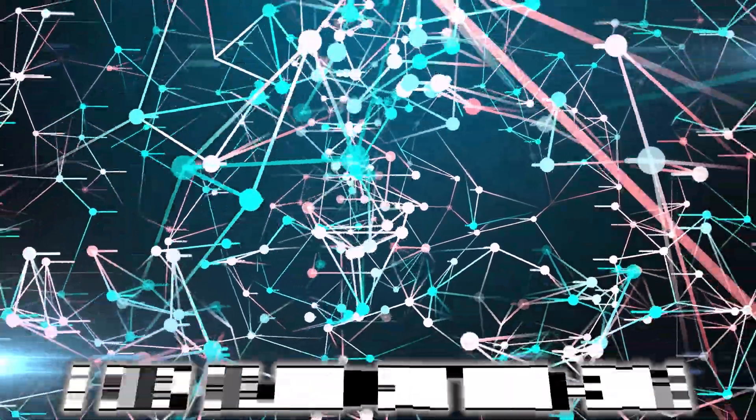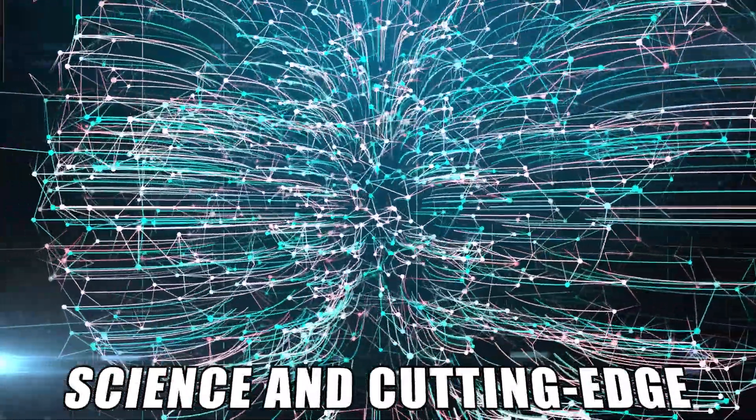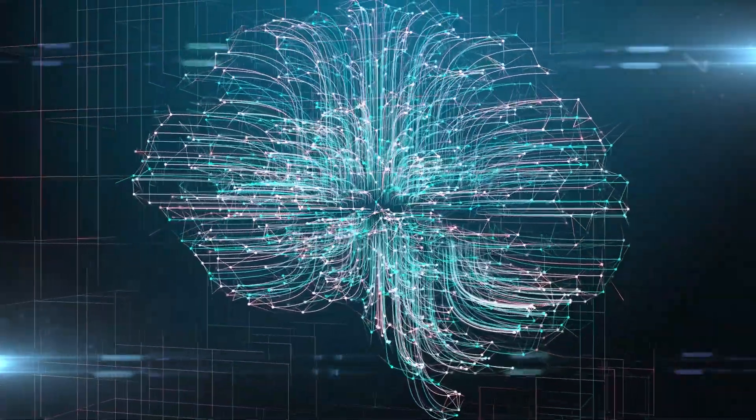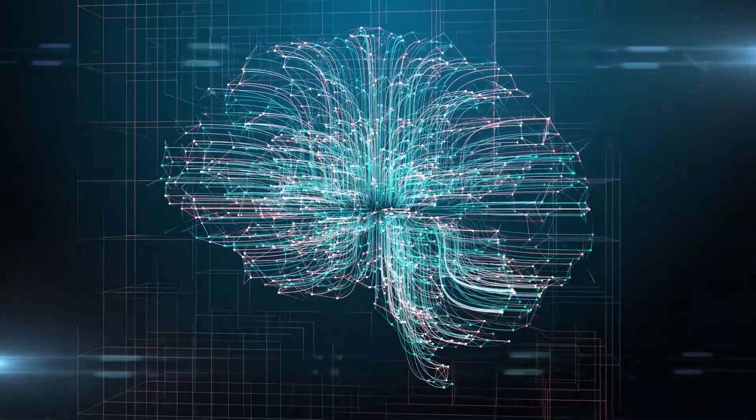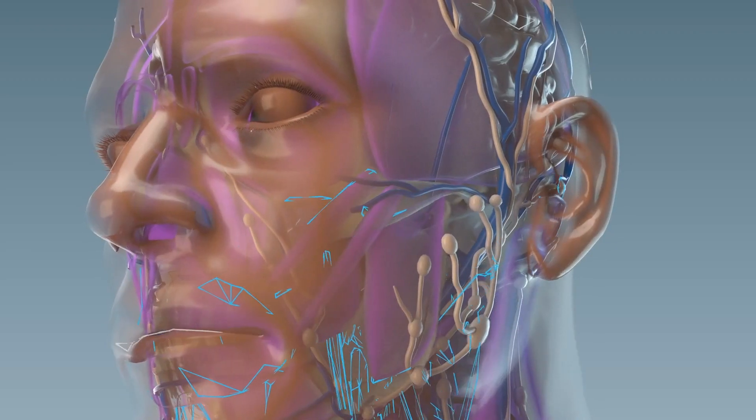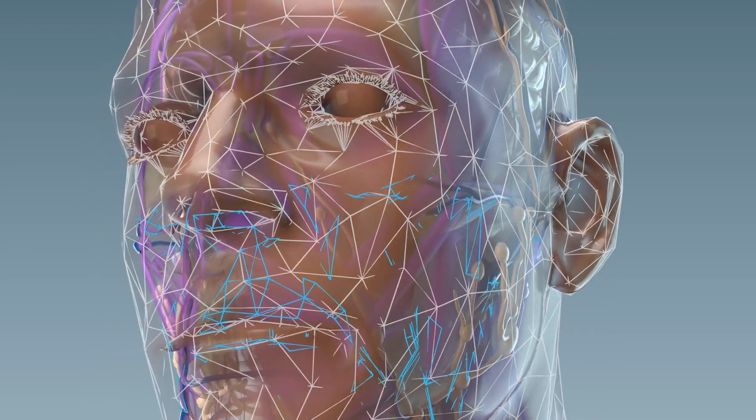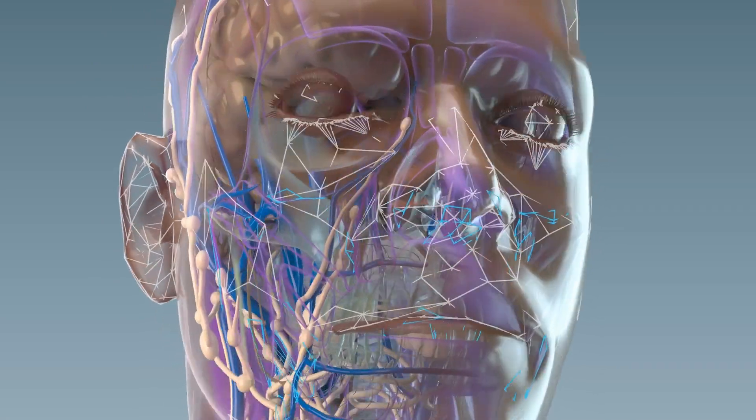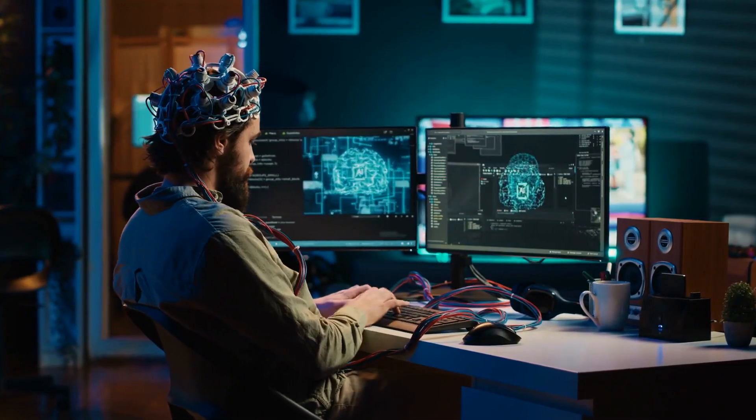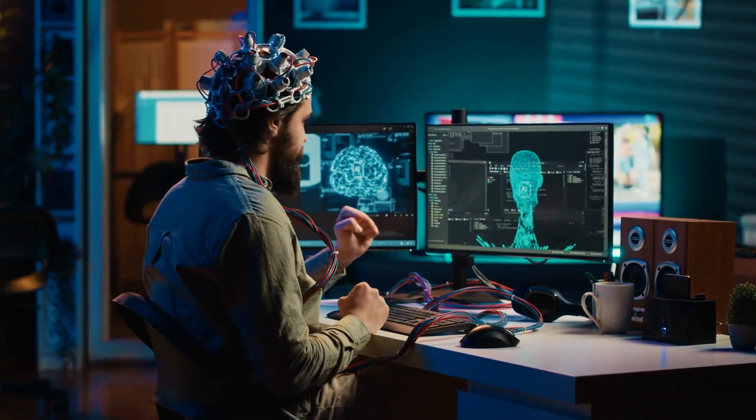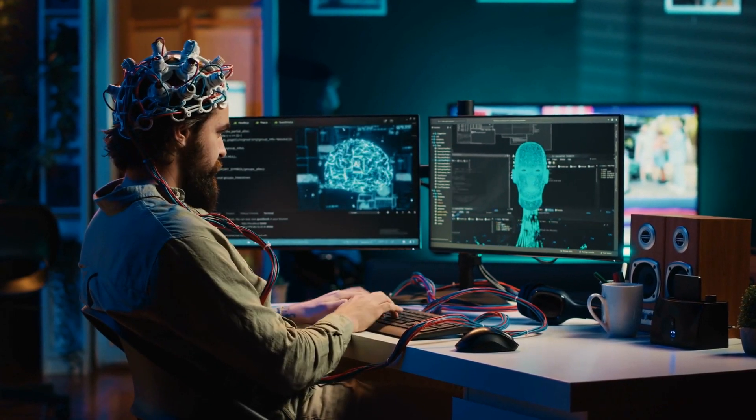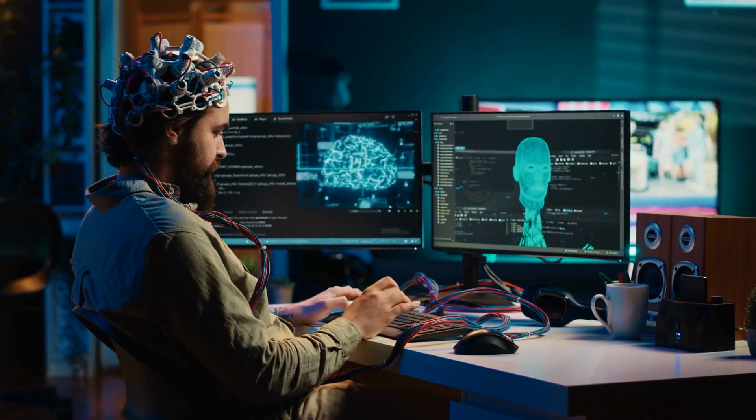Through a combination of advanced material science and cutting-edge engineering, Neuralink's threads form the backbone of a revolutionary brain-machine interface that holds the potential to redefine human-computer interaction as we know it. The implantation process of Neuralink's threads is facilitated by state-of-the-art surgical robotics, ensuring unparalleled precision and safety. Guided by advanced imaging techniques such as MRI and CT scans, the surgical robot navigates with submillimeter accuracy to implant the threads into targeted areas of the brain.